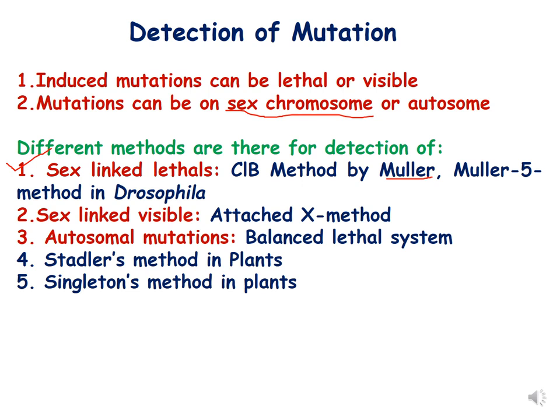Mutations can be present on the sex chromosome or autosome. There are different methods for detection of mutations, and sex-linked lethals can be detected by a method called the CLB method, which was devised by Mueller. There is another method called the Mueller-5 method. Both methods are used in Drosophila, but we will focus on the CLB method in this lecture.